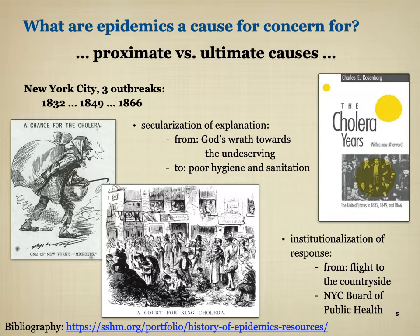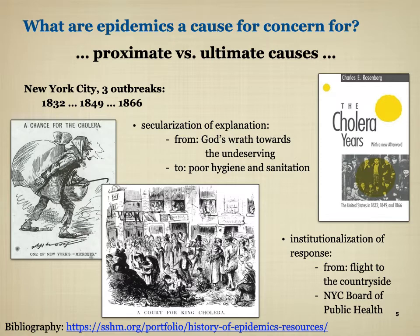At the beginning, people saw these diseases as God's wrath upon immoral, undeserving people, as well as a profound disruption. Over time, they started to focus more on what we'd call proximate causes — poor hygiene and sanitation — and began to secularize their explanations of disease in part to justify institutional interventions. By the last outbreak, you have an institutionalized response: where initially people's response was to flee to the countryside, by 1866 the New York City Board of Public Health was implementing measures to contain or prevent the spread.